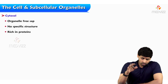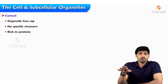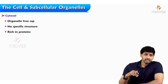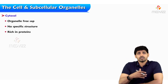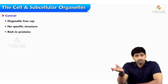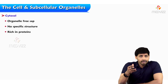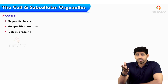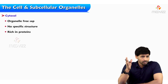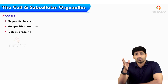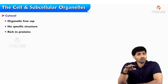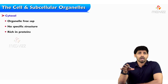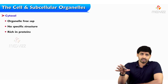There is no specific structure to the cytosol. The main contents of cytosol are: all subcellular organelles suspended within it, and it is also rich in proteins. Whatever proteins are synthesized in cytoplasmic ribosomes, Golgi complex, and endoplasmic reticulum, they're all released into the cytosol, and based on need, they'll be secreted outside the cell.